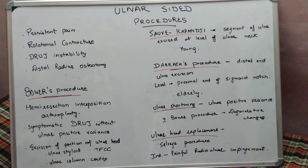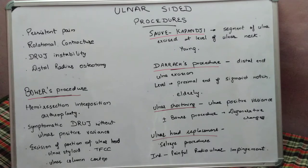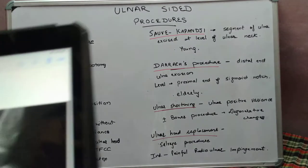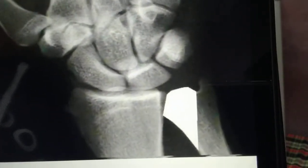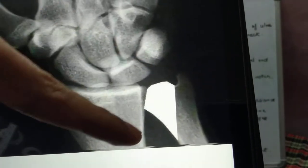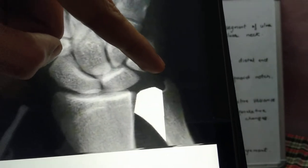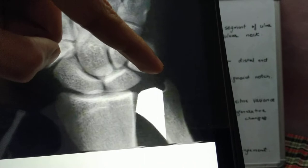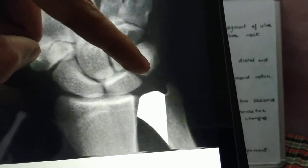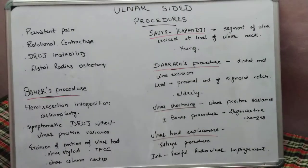We have five procedures we will discuss one by one. First is the Bowers procedure, which is the hemi resection interposition arthroplasty. As the name indicates, it is a hemi resection — we cut the ulnar half. What is preserved: the ulnar styloid, a part of the TFCC, and the ulnar column cortex are preserved.